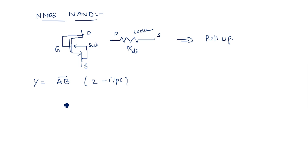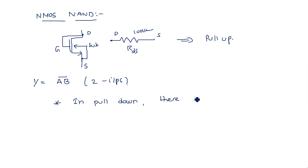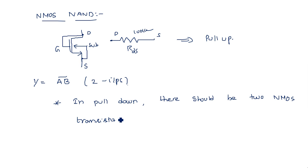The pull-down consists of a number of transistors equal to the number of inputs of your logic function. Since we have two inputs, there must be two NMOS transistors in the pull-down network.